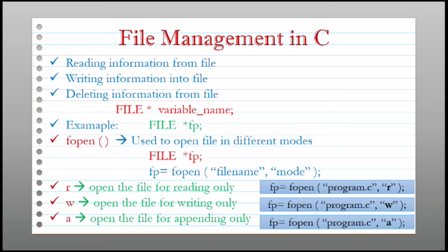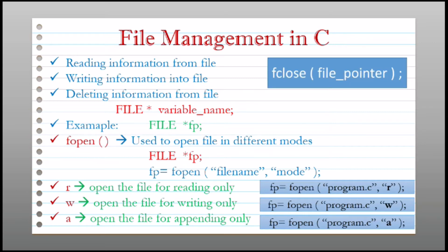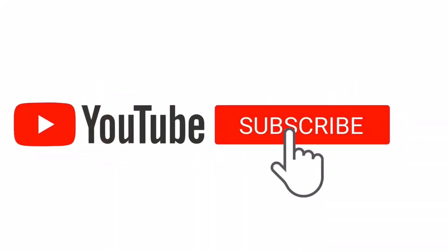Just like fopen is used to open a file, fclose is used to close the file. It is good practice to close a file when it is no longer required. A file must be closed as soon as all operations on it have been completed, as it prevents any accidental misuse of the file. The syntax of fclose is simply: fclose followed by the pointer variable name in brackets — the file pointer of the file that was opened using fopen.